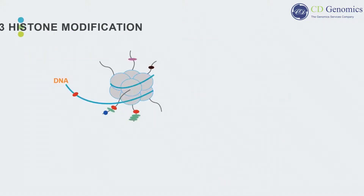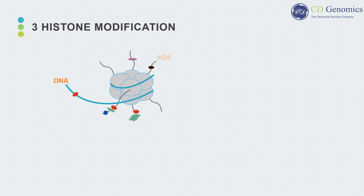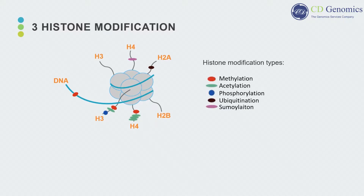Canonical nucleosomes are octamers containing H2A, H2B, H3, and H4 histone proteins. The predominant histone modifications include acetylation, methylation, phosphorylation, ubiquitination, and SUMOylation, with different combinations of modifications possible within a single nucleosome.